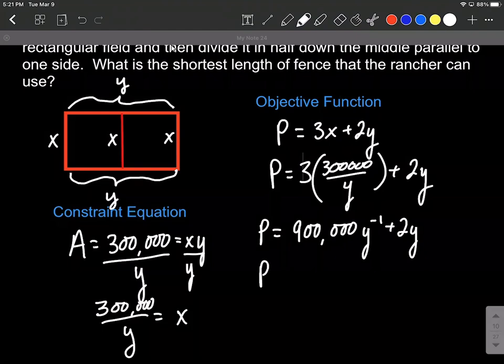So next up, we're going to take the derivative of p is going to be negative 900,000 y to the negative second power plus 2.